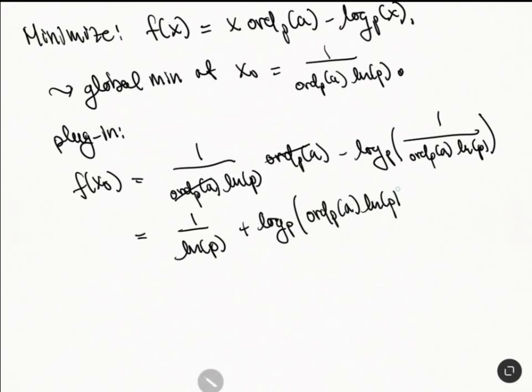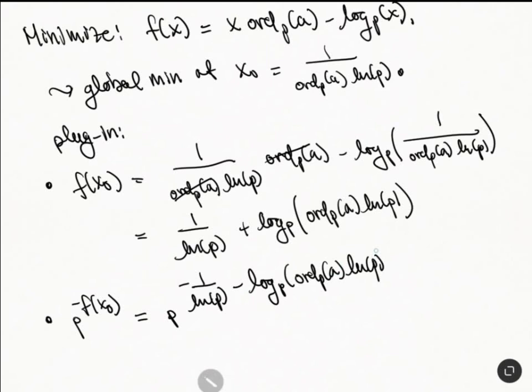And then what we're gonna do is we take p to this, because that's how we compute the norm. So then we have p to the f of x_0. I guess p to the minus f of x_0, and so this is p to the minus 1 over the natural log of p and then we have, I guess minus log_p, ord_p. So I'm just gonna flip this again. And so this is equal to 1 over ord_p(a) times natural log of p, and then we have p to the minus 1 over natural log of p.